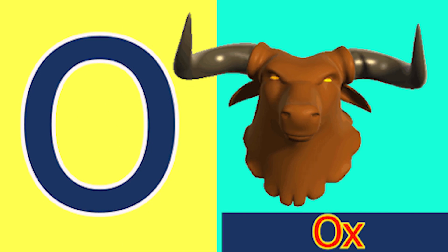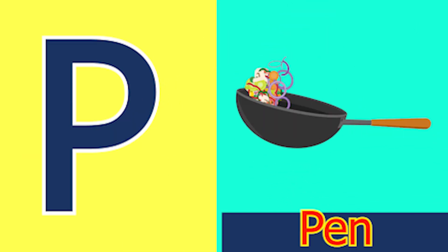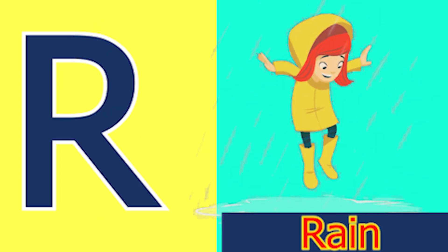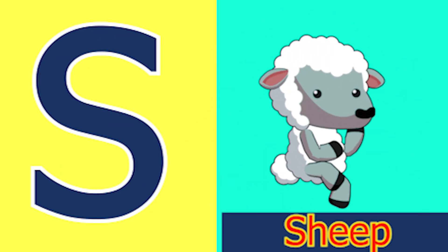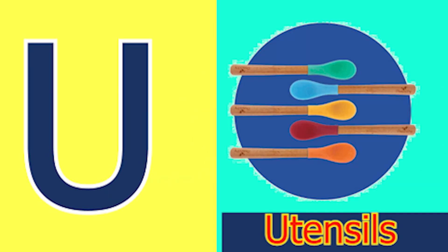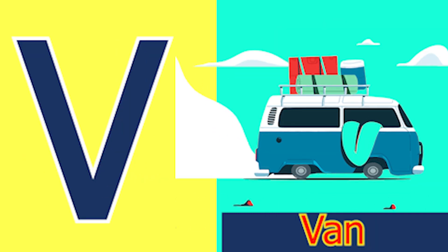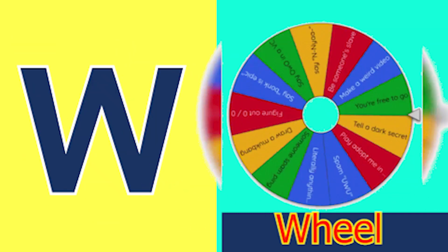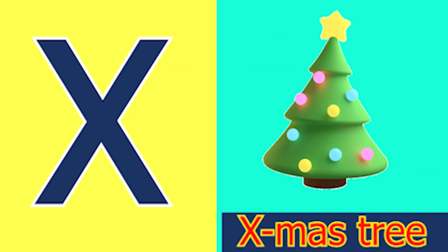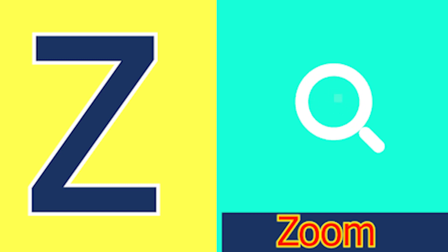N for nose, O for ox and P for pan, Q for quack and R for rain, S for sheep and T for tub, U for utensil, B for van, W for wheel and X for accessory, Y for yacht and Z for zone.